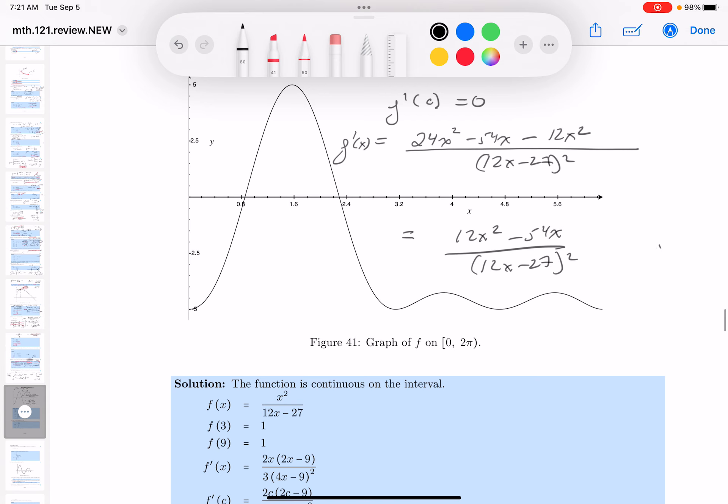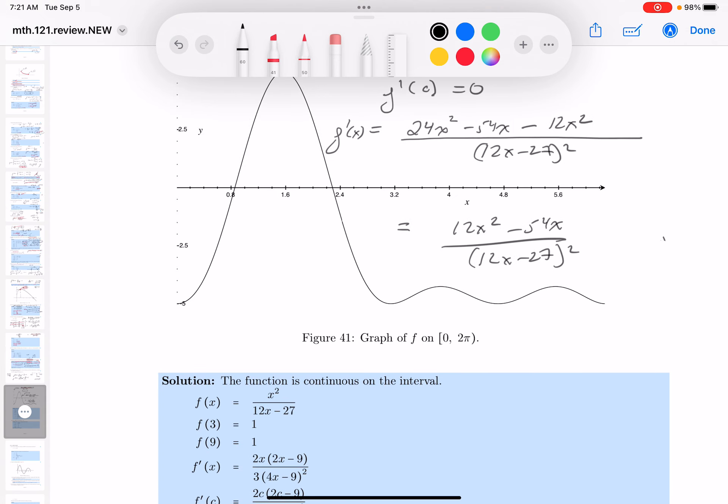And you get 12x squared minus 54x over 12x minus 27 squared. Now, certainly, I'm looking at this thing. When does it equal to 0? What c value makes it 0? Let me write this down. f prime of c equals 0. That's what I'm looking for. So it's going to be 12c squared minus 54c over 12c minus 27 quantity squared is equal to 0. Again, I'm not worried about where the bottom is 0 because it's not in that interval. So I'm really left with 12c squared minus 54c equals 0.